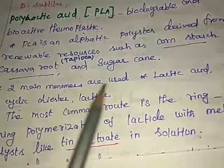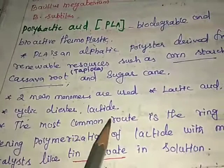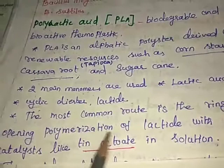The production of polylactic acid uses two main monomers: the first is lactic acid, and the second is cyclic diester lactide. The most common route for forming polylactic acid is the ring-opening polymerization of lactide with a metal catalyst such as tin, activated in solution.